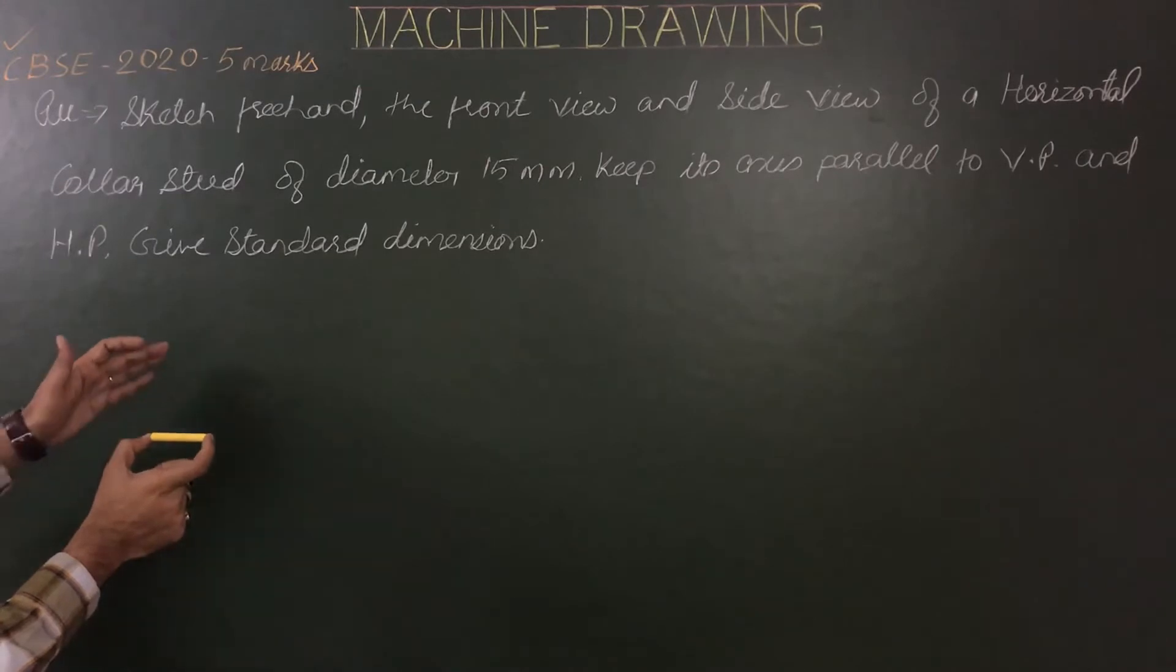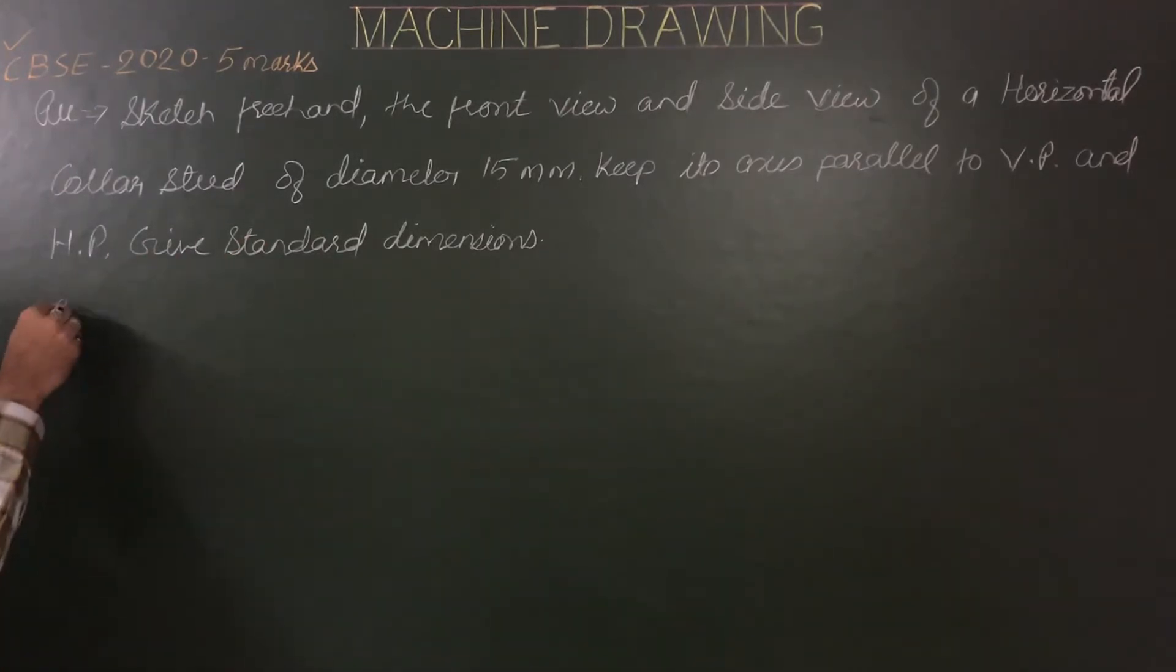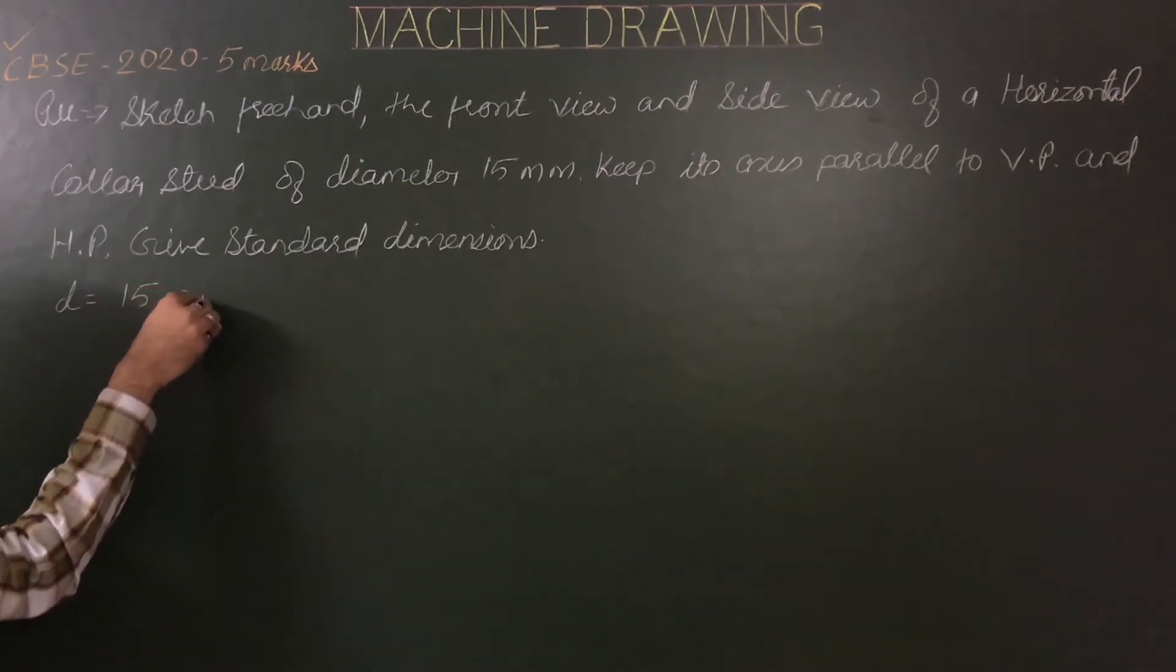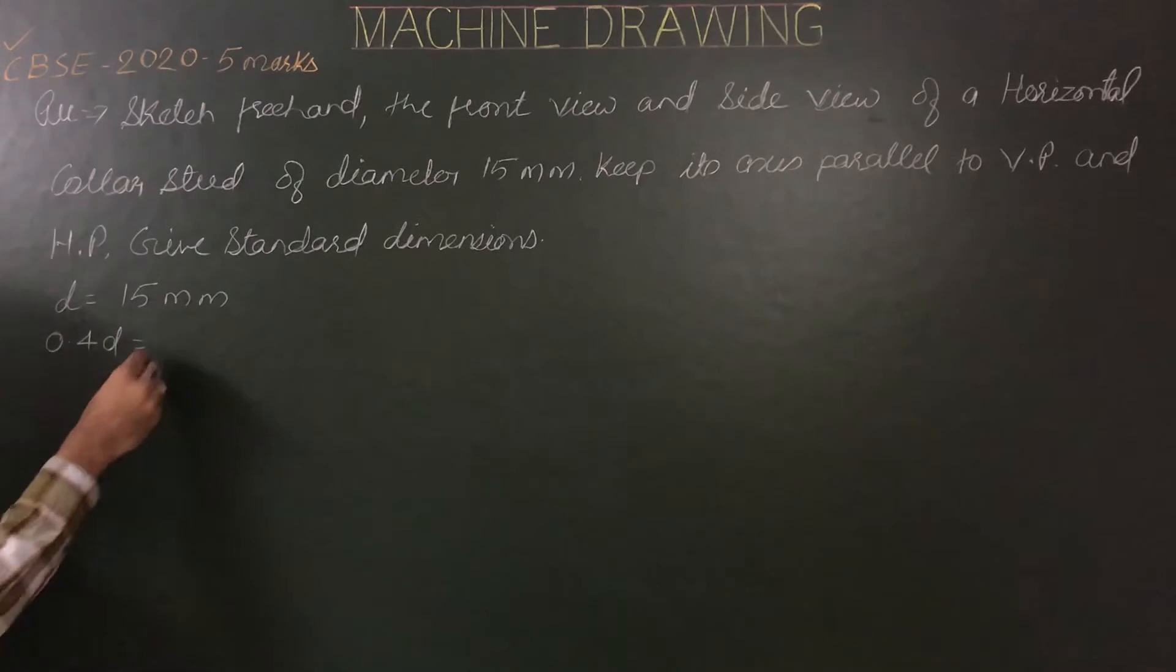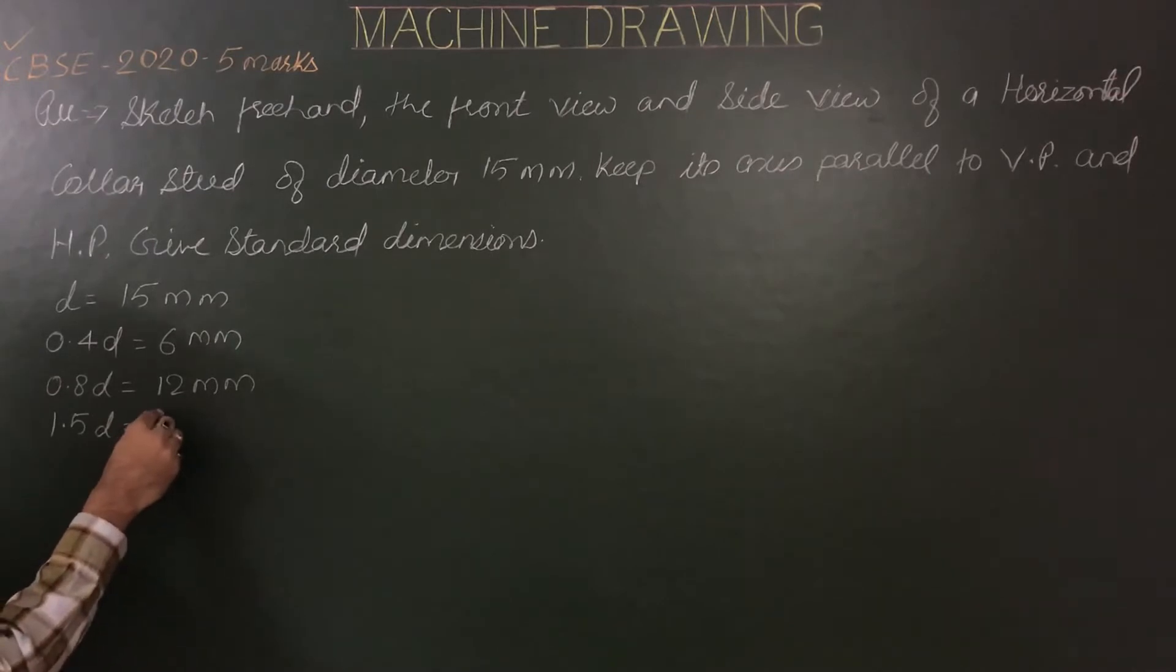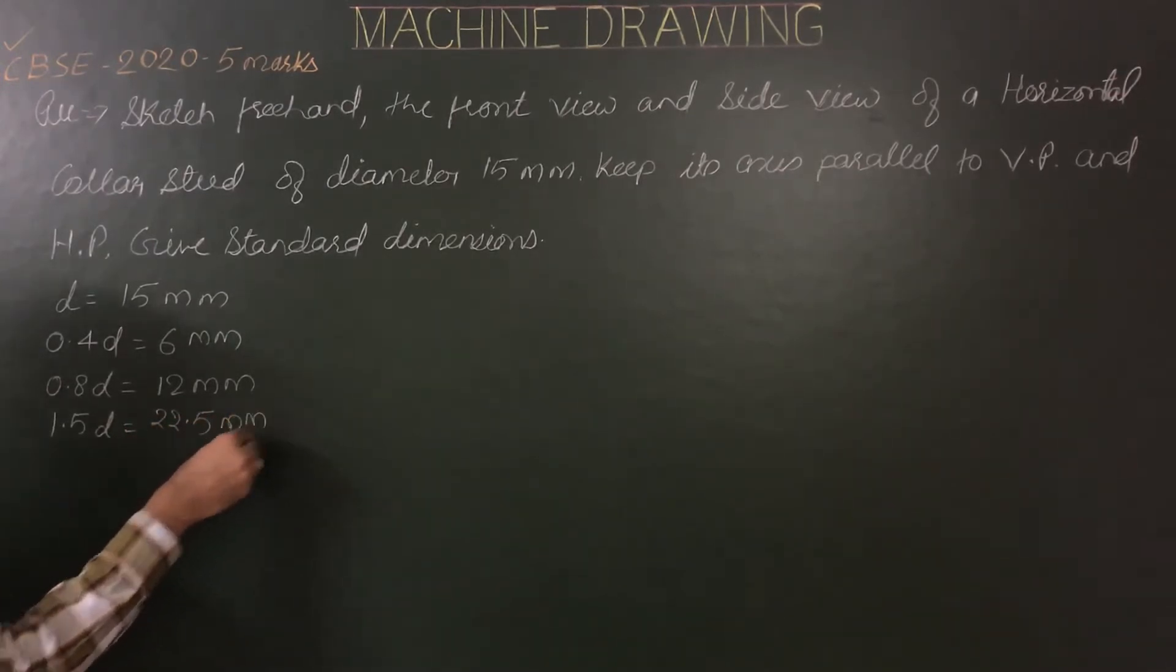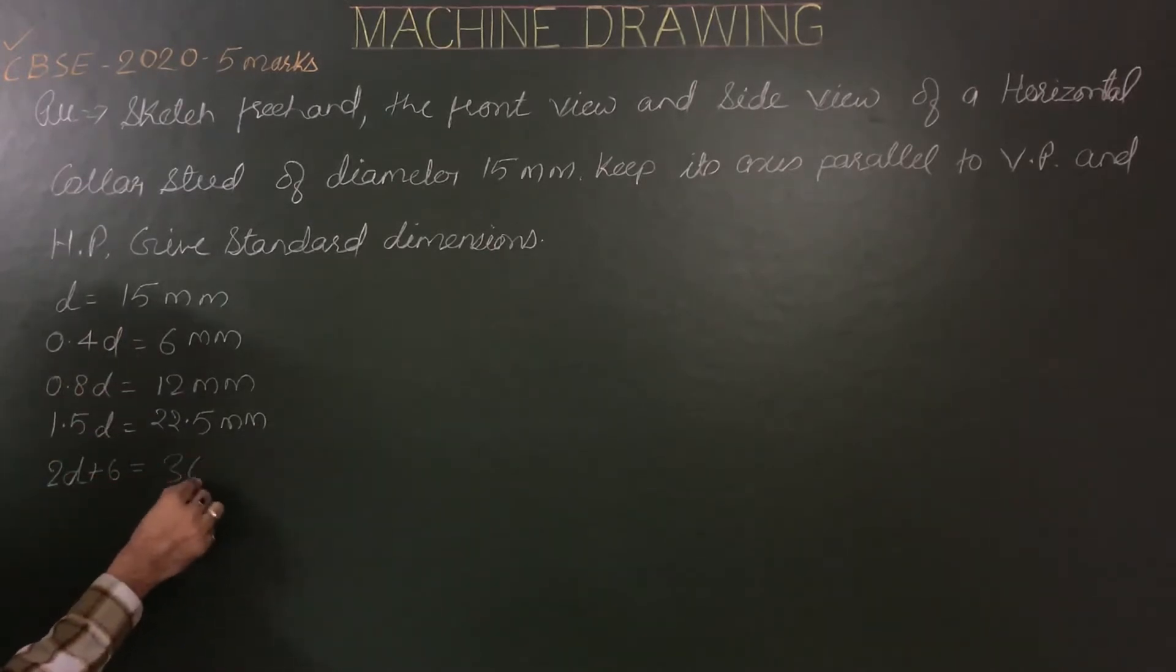Now first of all we are required to calculate all standard dimensions for 15 mm. Given diameter is 15 mm. Standard dimensions for collar stud are: 0.4 of d equals 6 mm, then 0.8 or 0.85 of d for internal threads, so 0.8 into 15 is 12 mm, then 1.5 of d diameter of collar is 22.5 mm, then we have 2d plus 6 length of the threads, so 2d is 30 plus 6 equals 36 mm. So these are all standard dimensions for its construction.